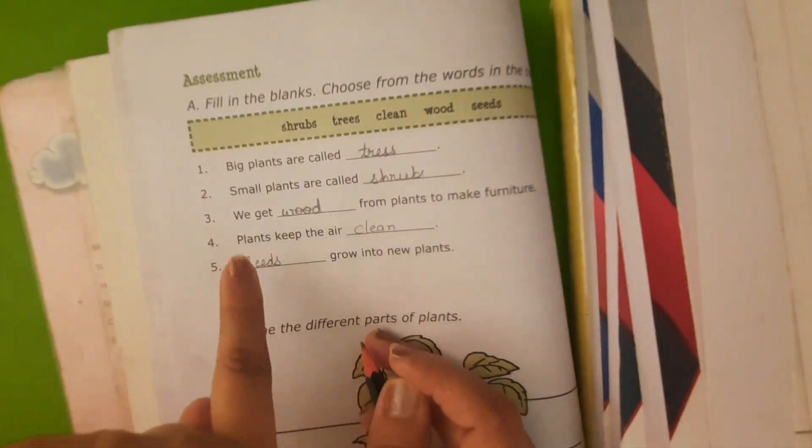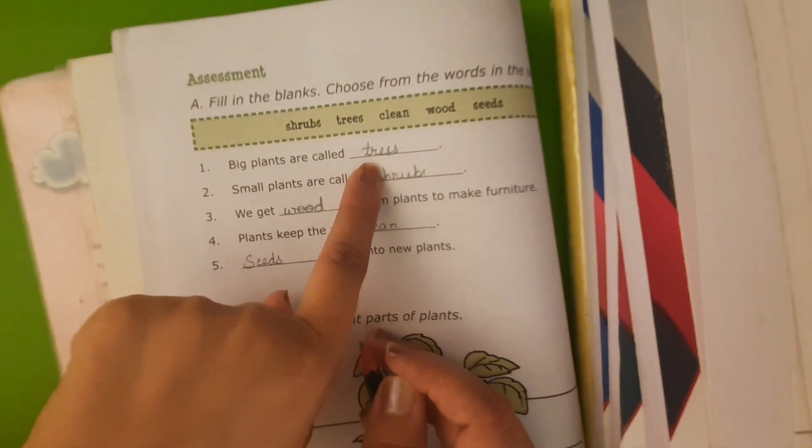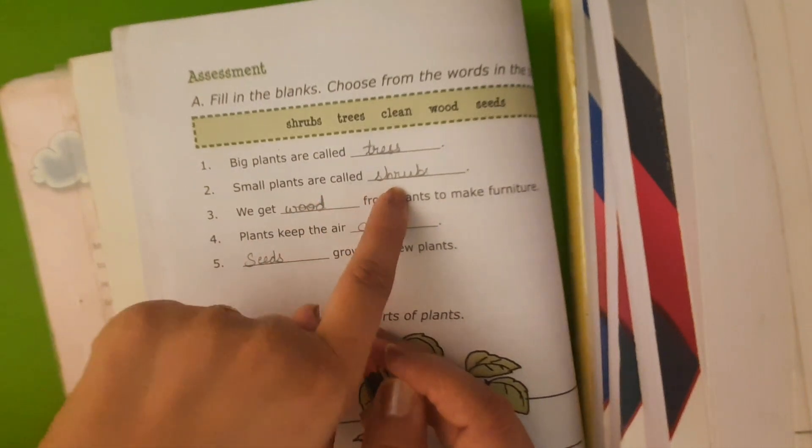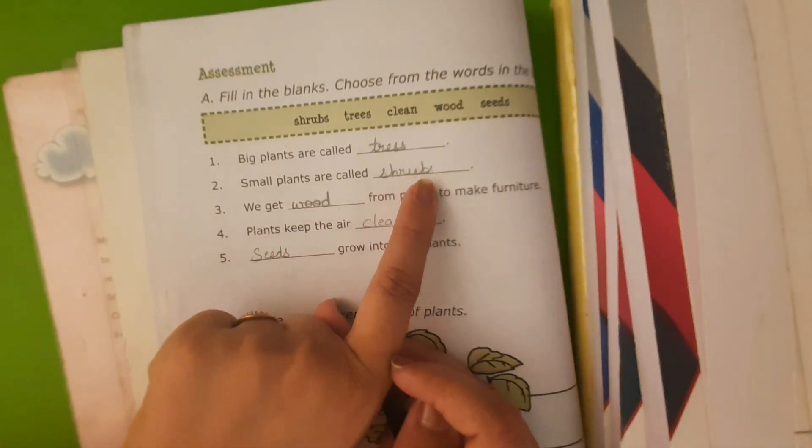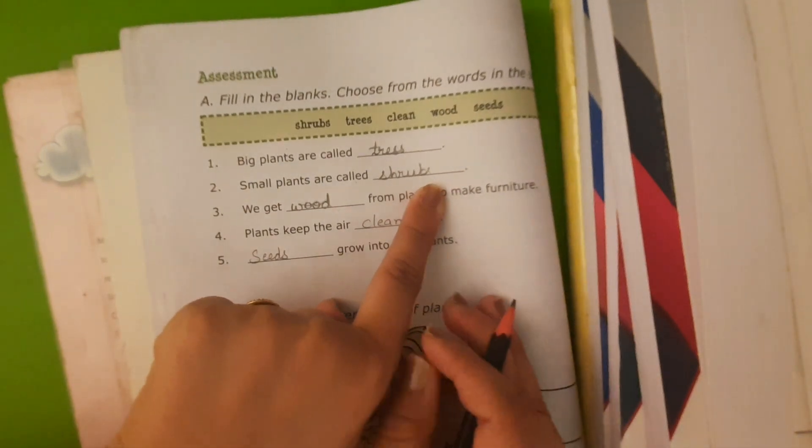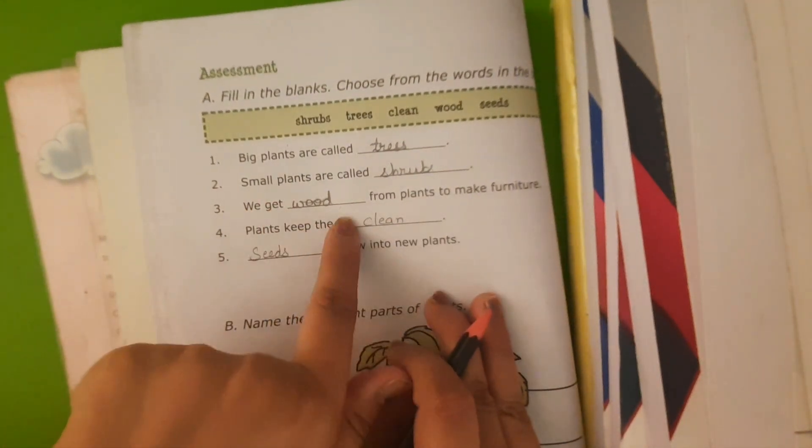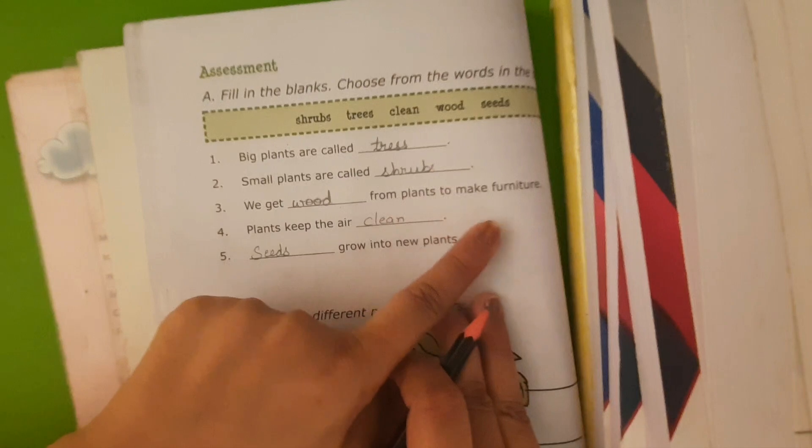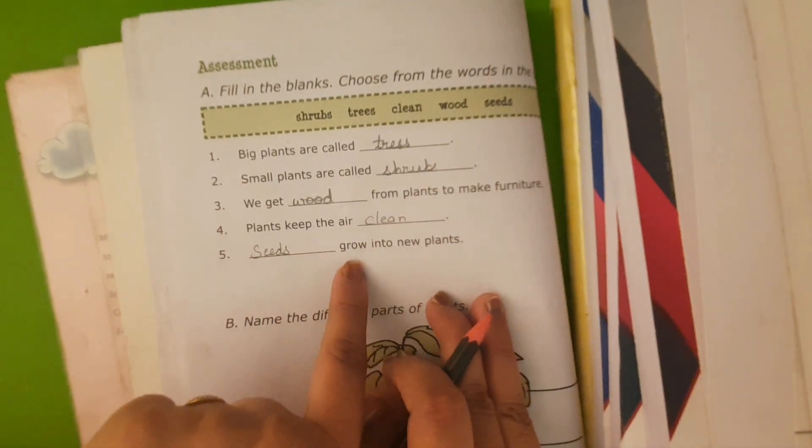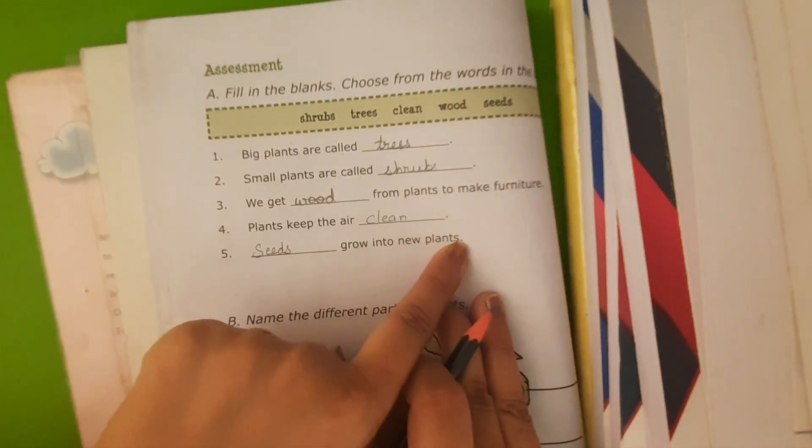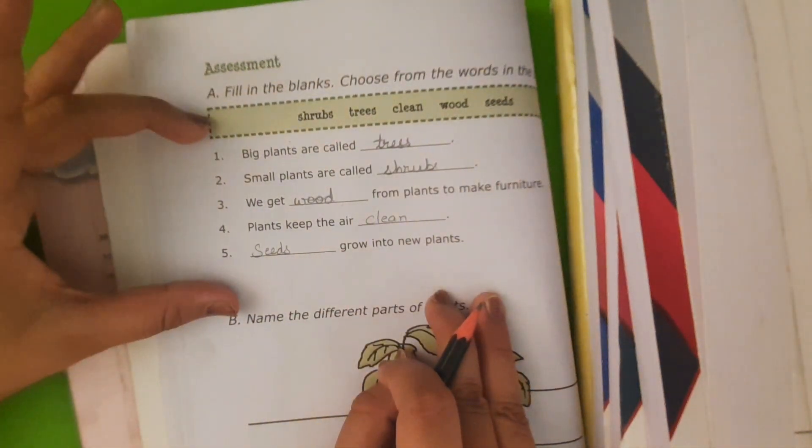So once again just revise it. Big plants are called trees. Small plants are called shrubs. We get wood from plants to make furniture. Plants keep the air clean. Seeds grow into a new plant. So these are the fill-ups. You have to revise it today.